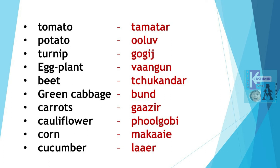Tomato is Tamater. Tamater. In the very olden times we used to also call tomato as Ruvangan. Ruvangan. Potato is Olu. Olu. Turnip is Gogej. Gogej.